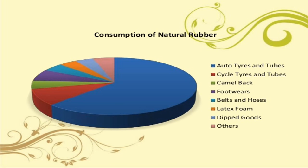The consumption of natural rubber can be seen in this pie chart. Auto tires and tubes use the maximum proportion of rubber production in India, followed by cycle tires and tubes, and then other products.